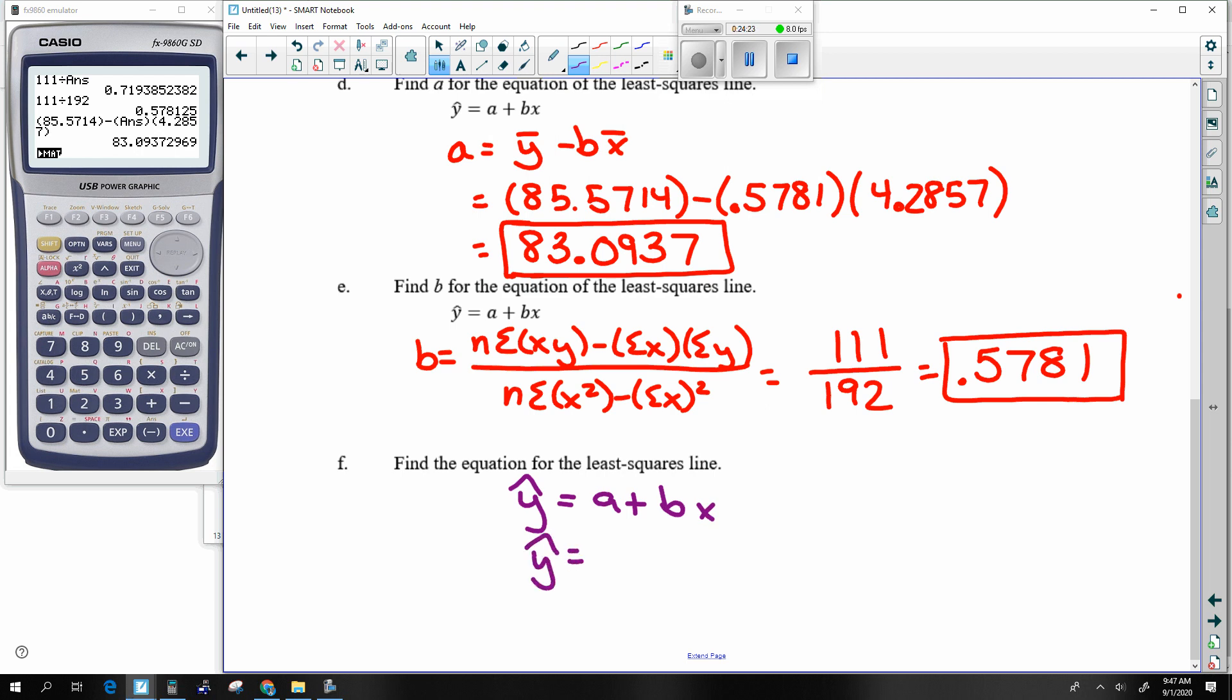And all I do is replace the letter a and b of the formula, but the y hat and the x stay the same. So this technically has a y-intercept of 83 and a slope of just a little bit more than a half.